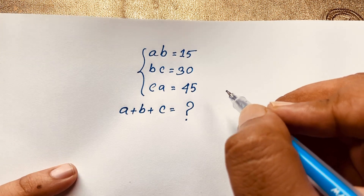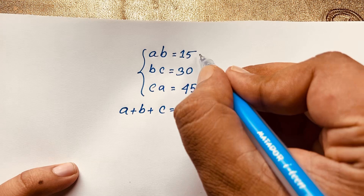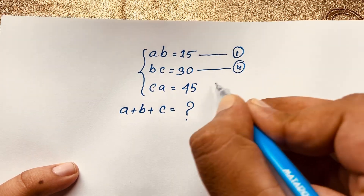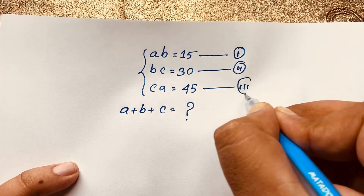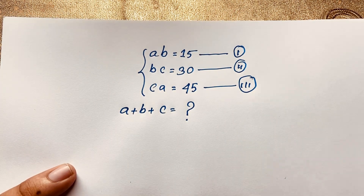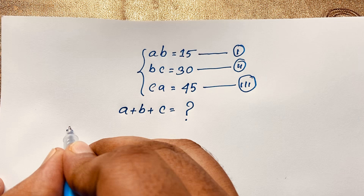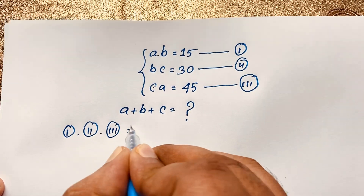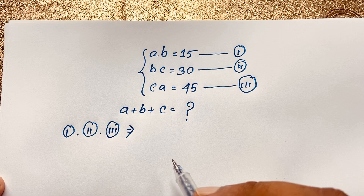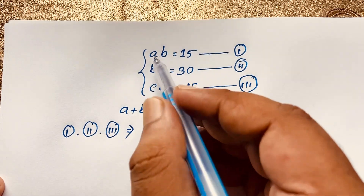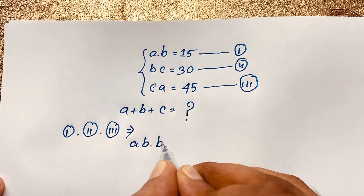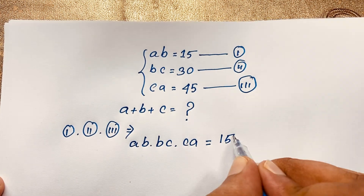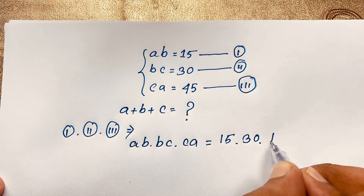To solve this, label these as the first, second, and third equations respectively. The method is to multiply all three equations together: ab times bc times ca equals 15 times 30 times 45.